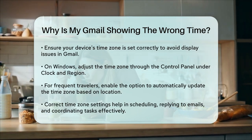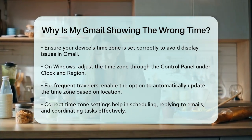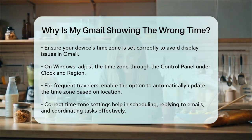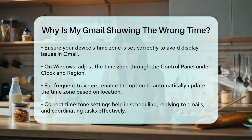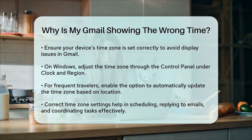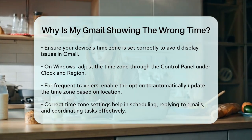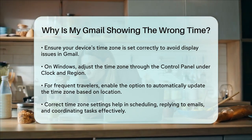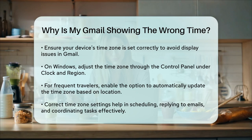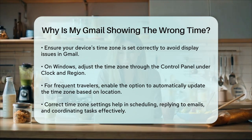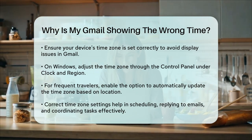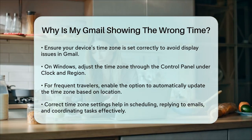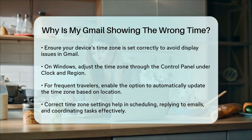By following these steps, you can ensure that your Gmail and Google Calendar are displaying the correct times, helping you stay organized and avoid any misunderstandings with your contacts. Remember, having the right time zone set is crucial for scheduling meetings, replying to emails, and coordinating tasks effectively, especially if you work with people in different time zones. So take a few minutes to check and adjust your settings — it will make a big difference in how smoothly your communications go.